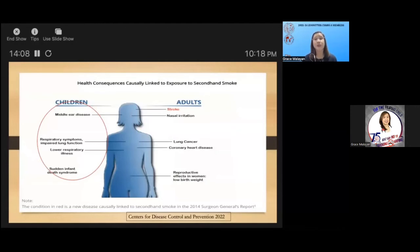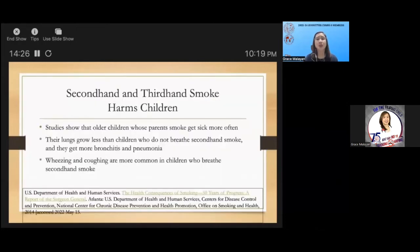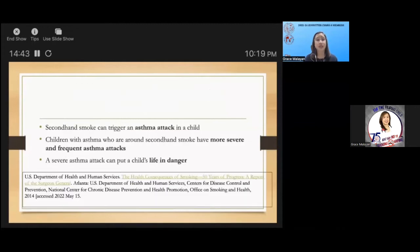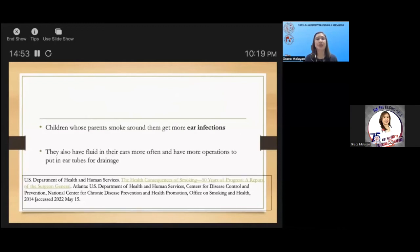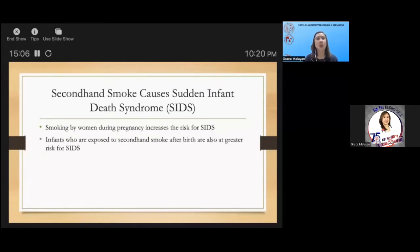Explain to them the health consequences of exposure to second-hand smoke in children. We may observe recurrent middle ear diseases, respiratory symptoms, impaired lung function, lower respiratory illnesses, and even sudden infant death syndrome. Studies show that older children whose parents smoke get sick more often and their lungs grow less than children who do not breathe second-hand smoke. They have more bronchitis and pneumonia, they can experience wheezing and coughing. Second-hand smoke can also trigger asthma attacks, and severe asthma attacks can put a child's life in danger. Children whose parents smoke around them will have recurrent ear infections, thus more operations to put in ear tubes for drainage.